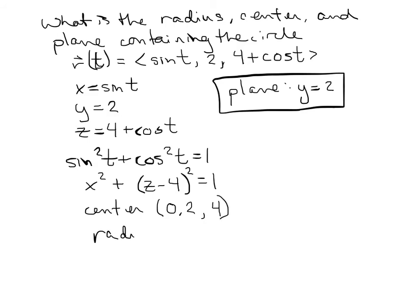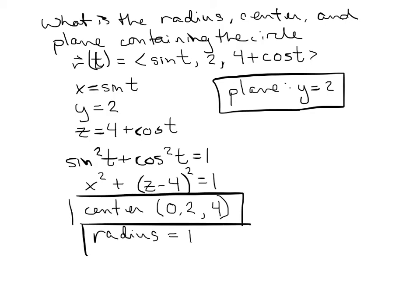Now I have an equation of a circle I can interpret. The center: in three dimensions, x is 0, z is 4, and y is always 2, so the center is (0, 2, 4). For the radius, I look at the right-hand side of that equation — the radius is 1. So the plane is y equals 2, the center is (0, 2, 4), and the radius is 1.